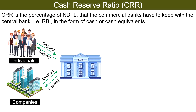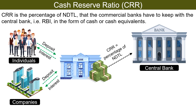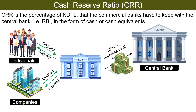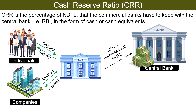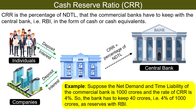Moving on to Cash Reserve Ratio. CRR is the percentage of net demand and time liabilities that commercial banks are obligated to keep with the central bank in the form of cash and cash equivalents. For example, suppose the net demand and time liability of the commercial bank is 1000 crores and the rate of CRR is 4%. So the bank has to keep 40 crores — that is 4% of 1000 crores — as reserves with RBI.